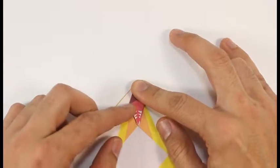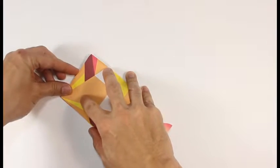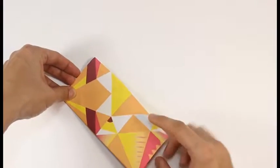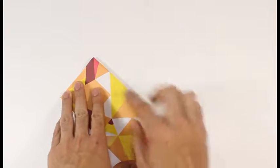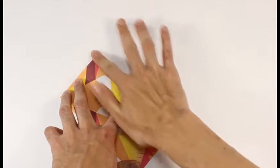Fold one flap over so both sides are the same. We're going to fold the top edge down to the bottom. Crease.